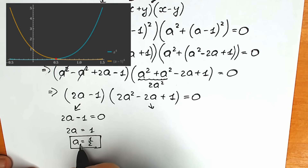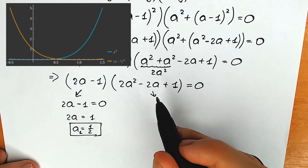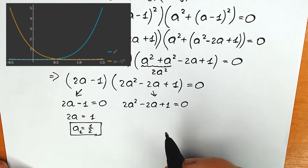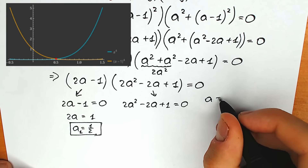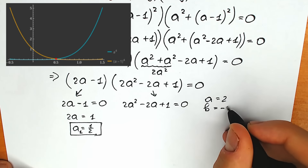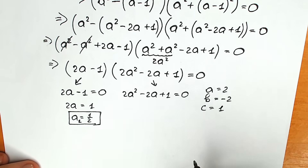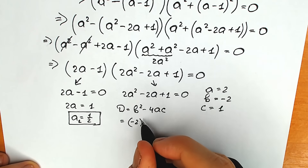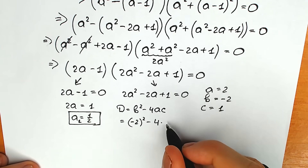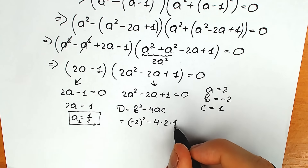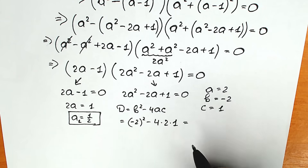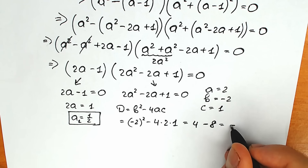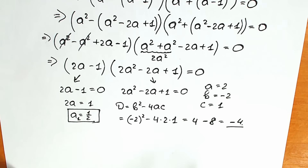Now let's solve the second parenthesis: 2a² minus 2a plus one equals zero. We find the discriminant using the method of coefficients: a = 2, b = −2, c = 1. The discriminant is D = b² minus 4ac = (−2)² minus 4 times 2 times 1 = 4 minus 8 = minus 4. Since the discriminant is negative, this parenthesis gives us two complex roots.